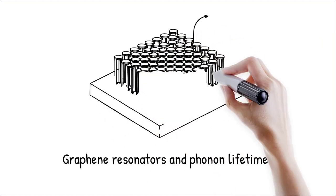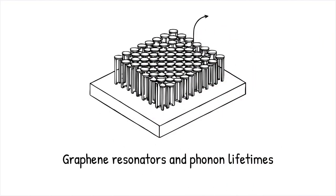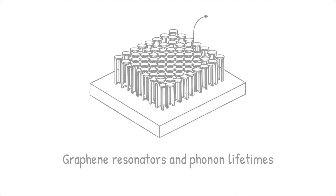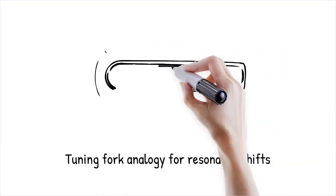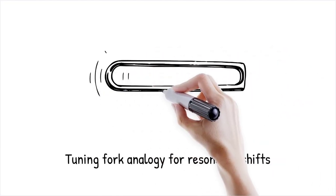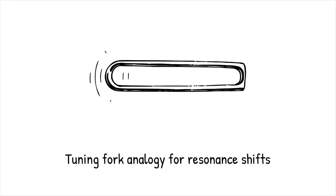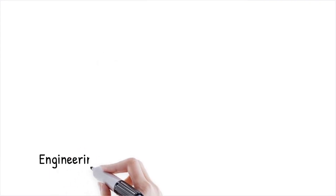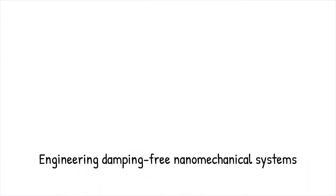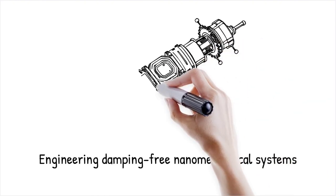Graphene resonators, for example, exhibit near-zero temperature dependence under some conditions due to anomalous phonon lifetimes, contradicting classical expectations. This is like a tuning fork changing its pitch unpredictably based on air temperature, defying traditional expectations of how materials should behave.